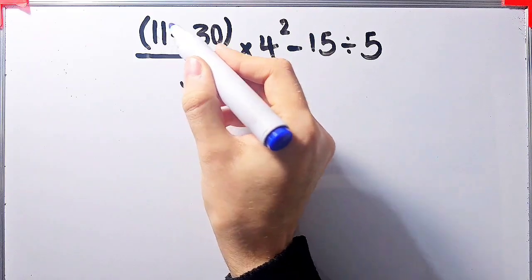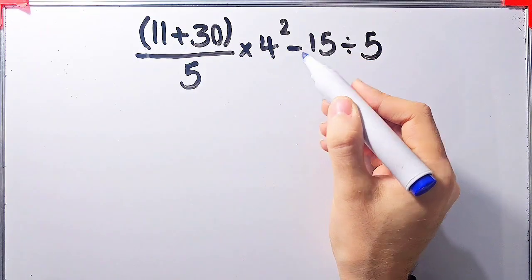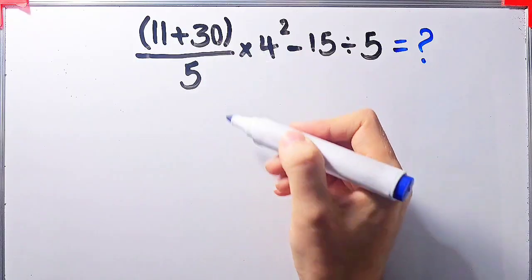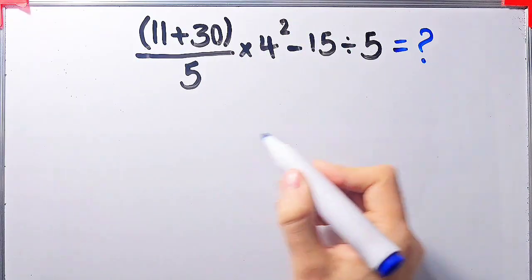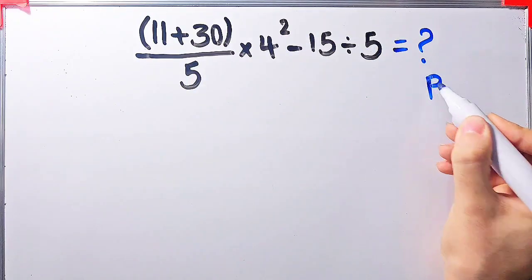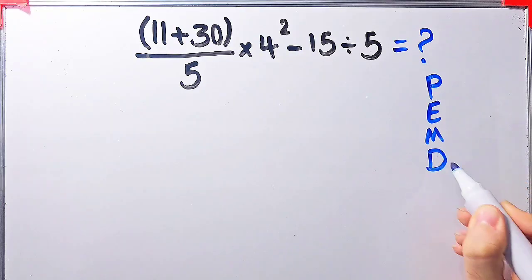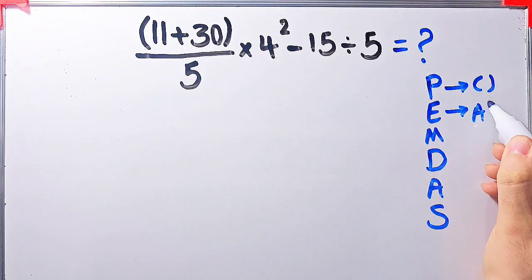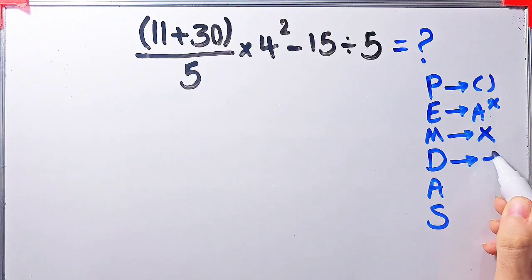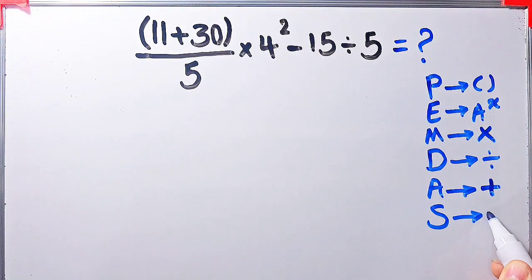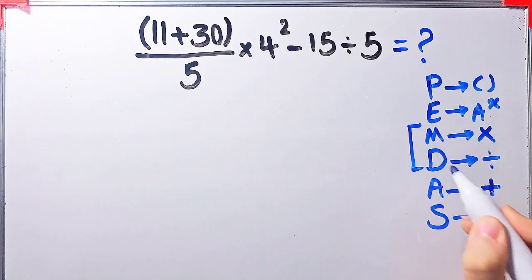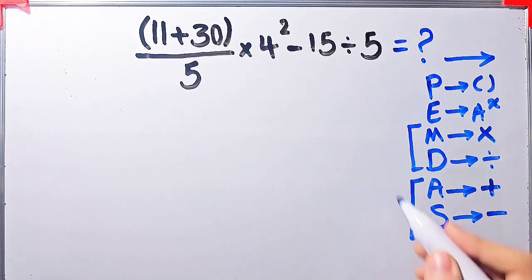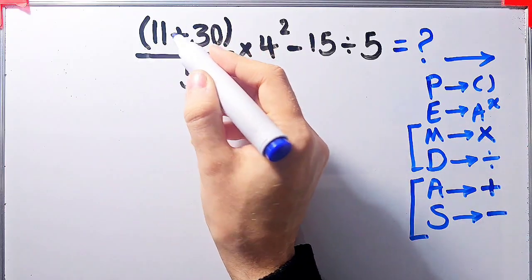Let's solve another question about the PEMDAS rule: open parentheses 11 plus 30 close parentheses, over 5, times 4 to the power of 2, minus 15 divided by 5. In this question we have parentheses, addition, multiplication, exponent, subtraction, and division. According to PEMDAS — P for parentheses, E for exponent, M for multiplication, D for division, A for addition, S for subtraction — first we simplify the parentheses: 11 plus 30 equals 41.